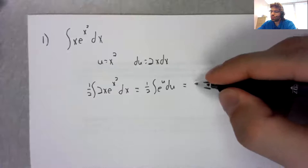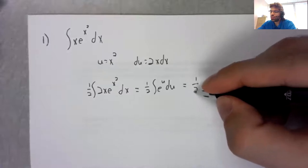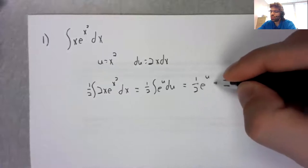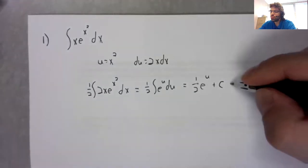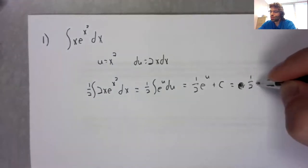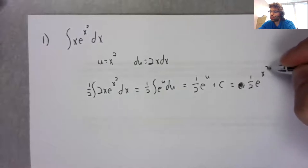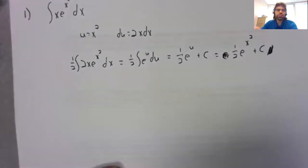The antiderivative of e to the u is e to the u, and u is x squared.